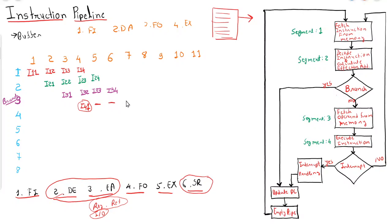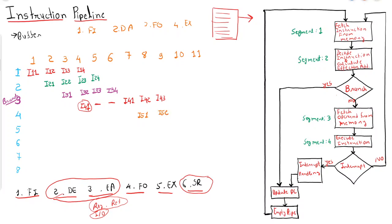From that point onwards, the new instruction fetched will be from a new memory location — let's call it instruction 4' (from the branch target). In the next clock cycle, instruction 5 enters segment 1 and instruction 4' enters segment 2. In the following clock cycle, instruction 4' enters segment 3, instruction 5 enters segment 2, and instruction 6 enters segment 1. Now let me draw a memory map to clarify how this works.